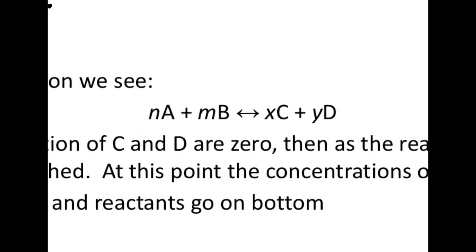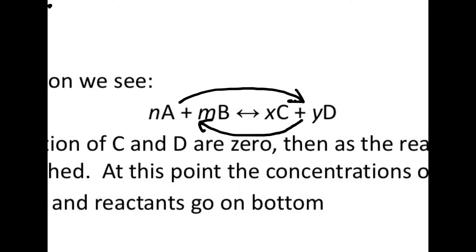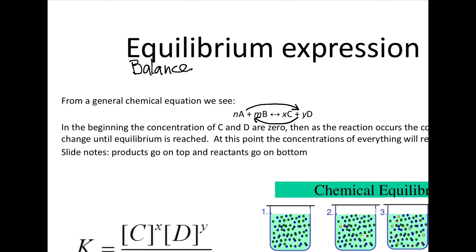We've seen a lot of chemical equations. This is just using some symbols instead of elements, but the idea is that N, M, X, and Y just mean coefficients, and A, B, C, and D are just meant to be chemicals — whether elements or compounds. What you might notice is in the center this double-pointed arrow, because what this is referring to is the forward reaction happening at the same time as the reverse reaction. So what we're looking at here is what's called an equilibrium.